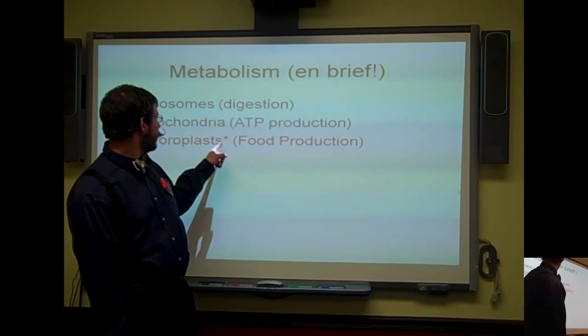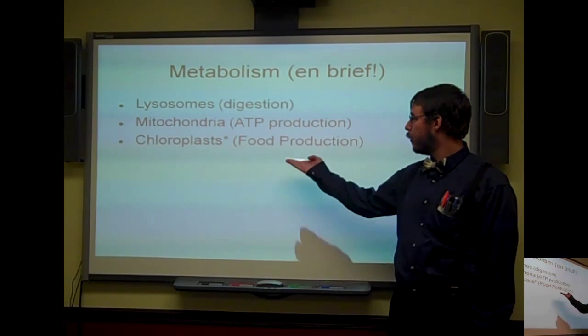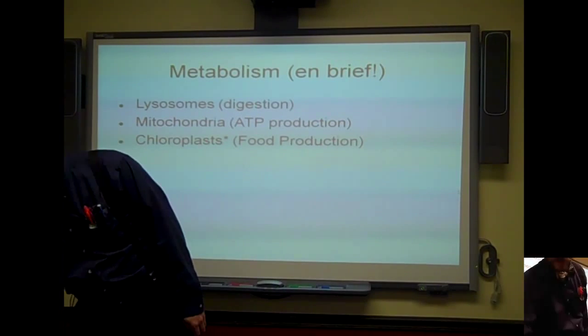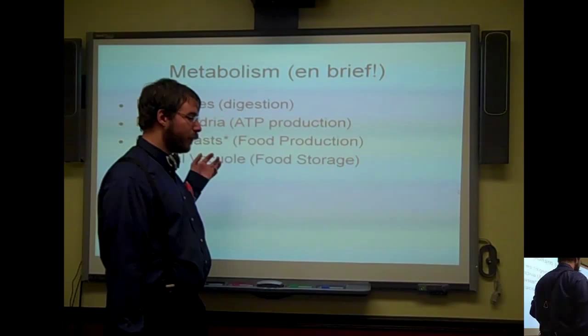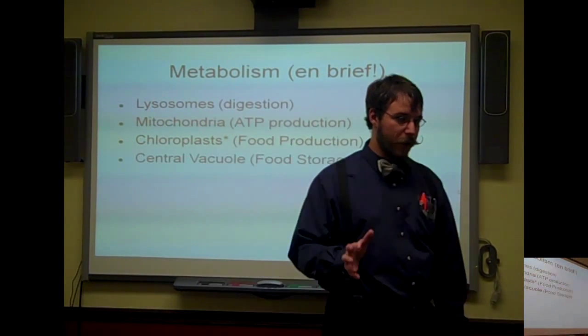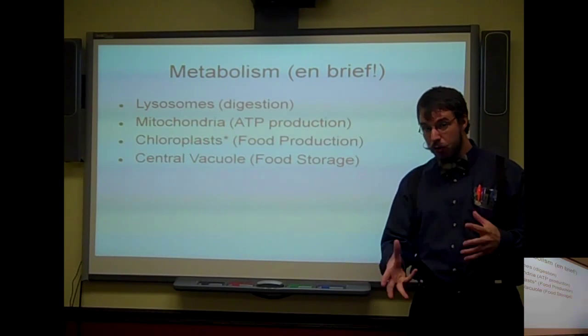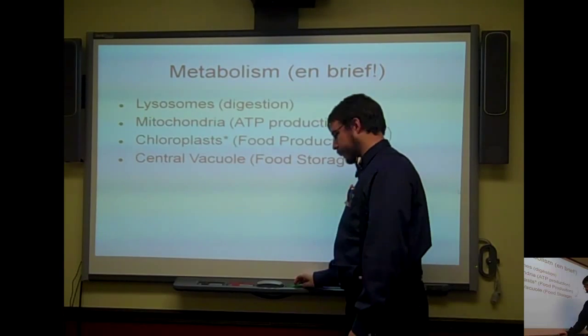There's also chloroplasts. Chloroplasts with the asterisk there is plant only, so a plant only has the ability to make food. We do not have the ability to make food, therefore we are lacking chloroplasts and not green. Many plants also tend to have a very large central vacuole. The central vacuole is going to be for storing the food that's made on the chloroplasts.